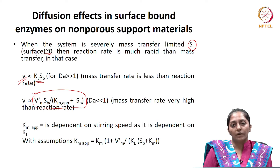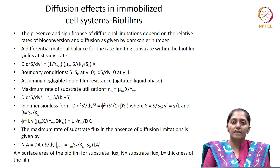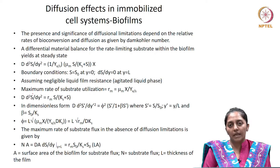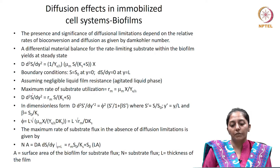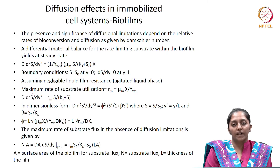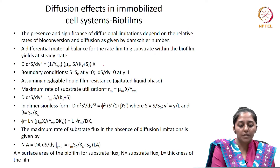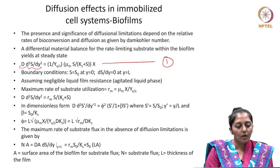Now let us take an immobilized cell system on flat surfaces following Monod kinetics — for example, bacteria immobilized on surfaces in wastewater treatment. The significance of diffusional limitations depends on the relative rates of bioconversion and diffusion, determined using the Damköhler number. Doing a material balance for the rate-limiting substrate within this biofilm at steady state, the left-hand side uses Fick's second law of diffusion for the rate of substrate transfer.